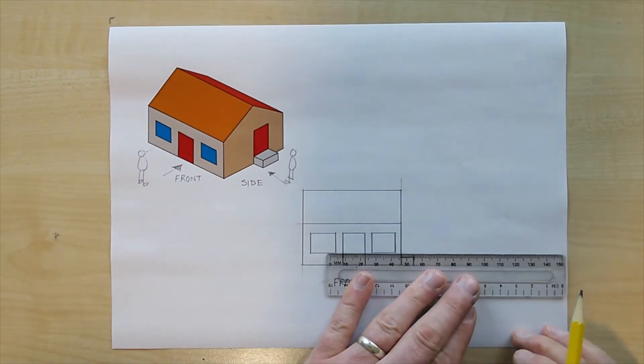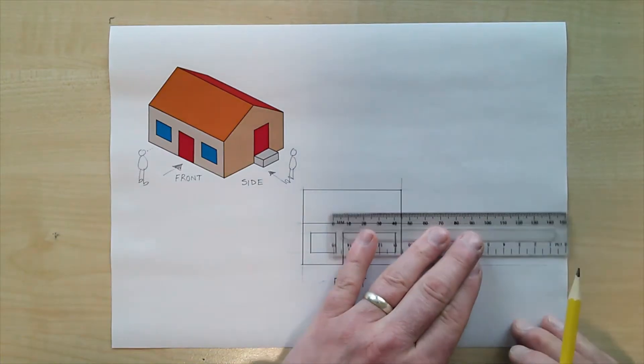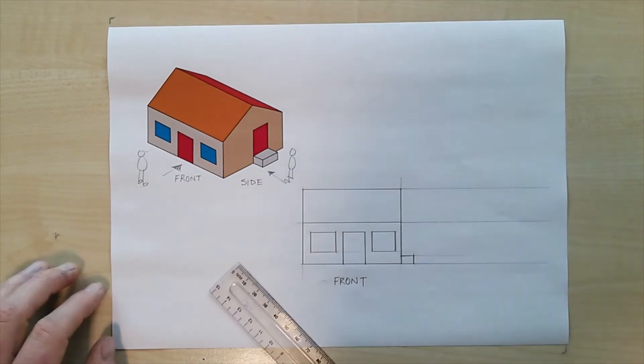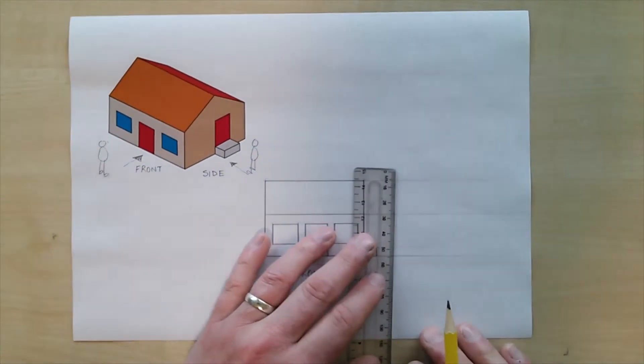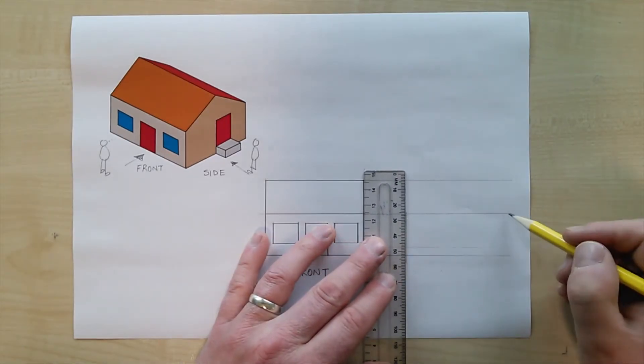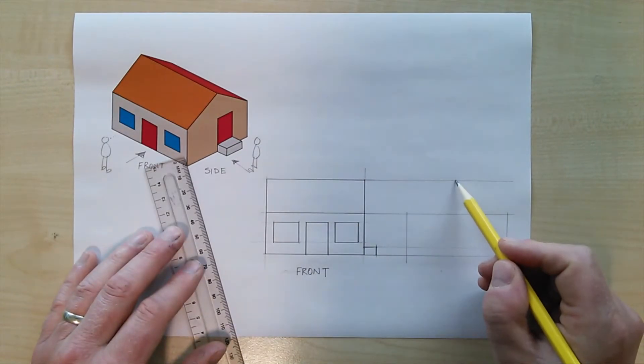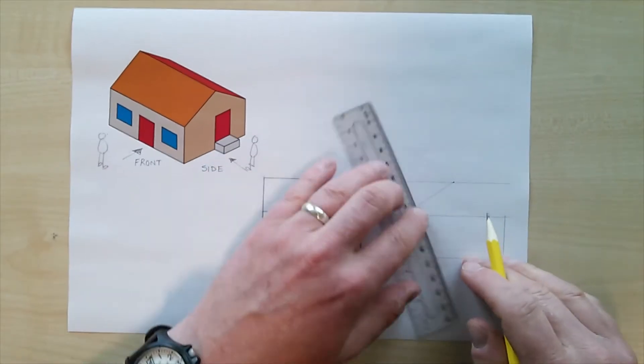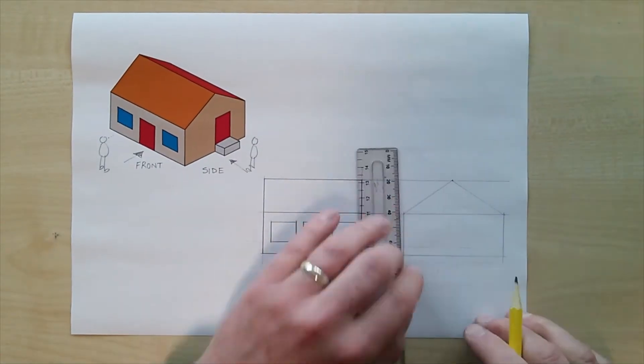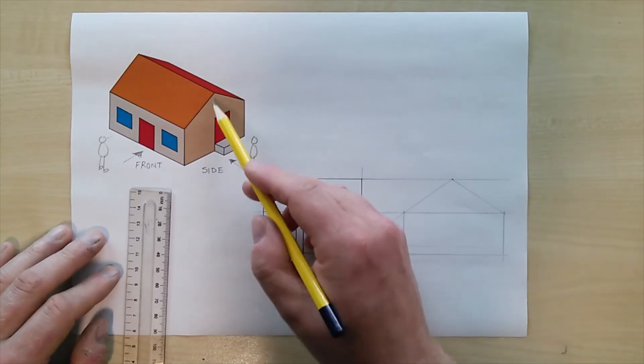Immediately I can start to transfer sizes across using my ruler here and again I'm using construction lines nice and light, but anything like the height of the roof or the height of the step I can transfer across and make use of those sizes. I'm not measuring anything again, I'm just simply at this stage trying to figure out proportions.